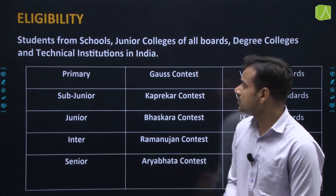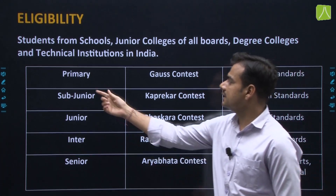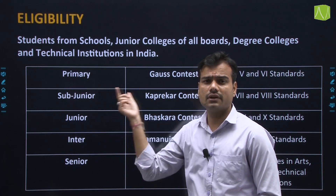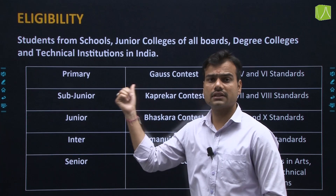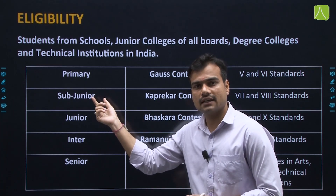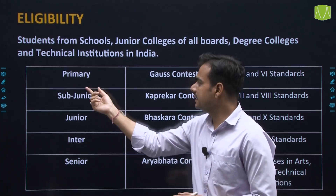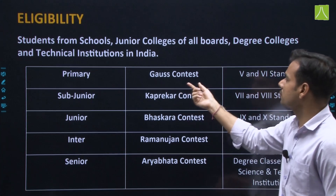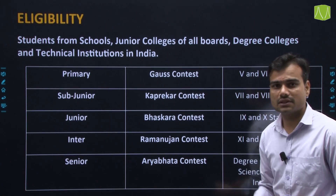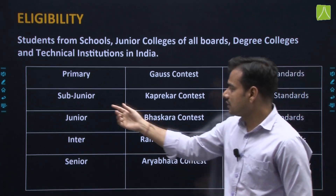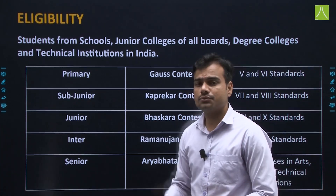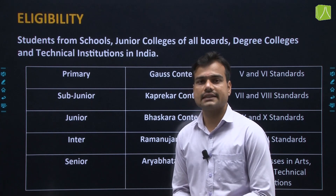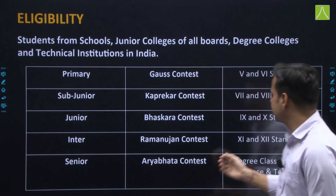There are two types of exams. The first exam is for 5th to 6th class students — this is the Primary level, which we know as the Goals Contest. The next exam is the Sub-Junior exam, which is for the next level of students.